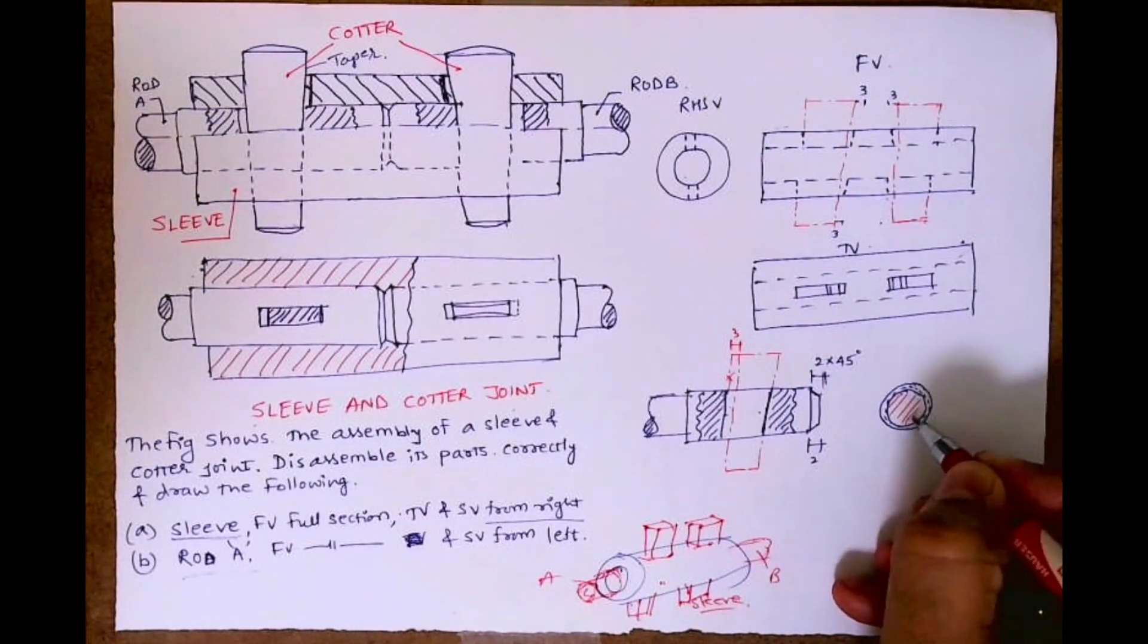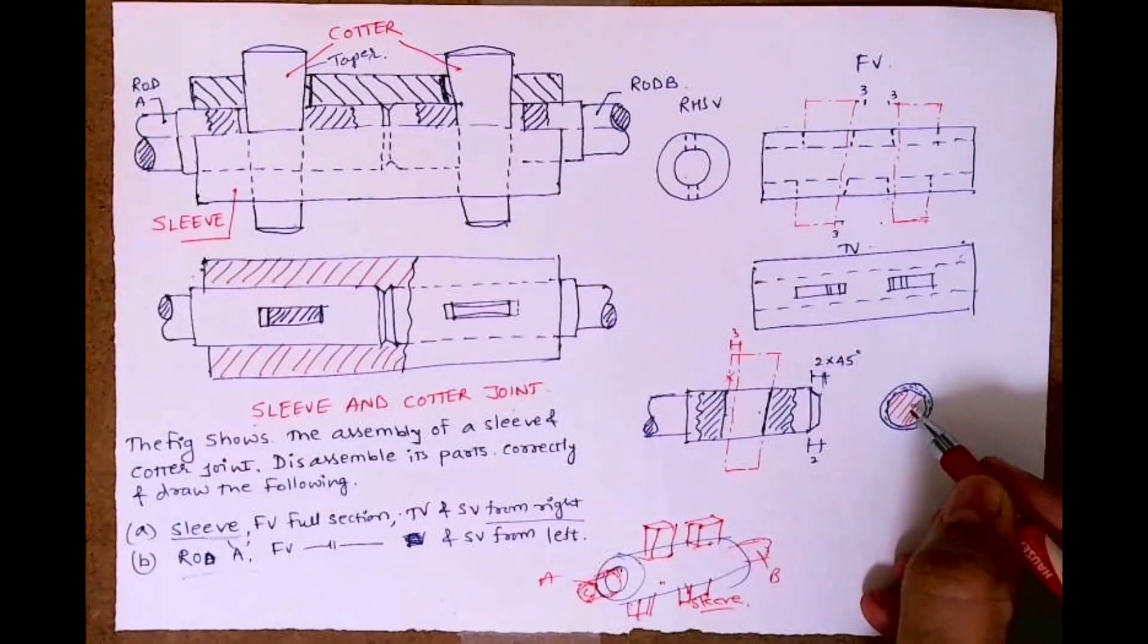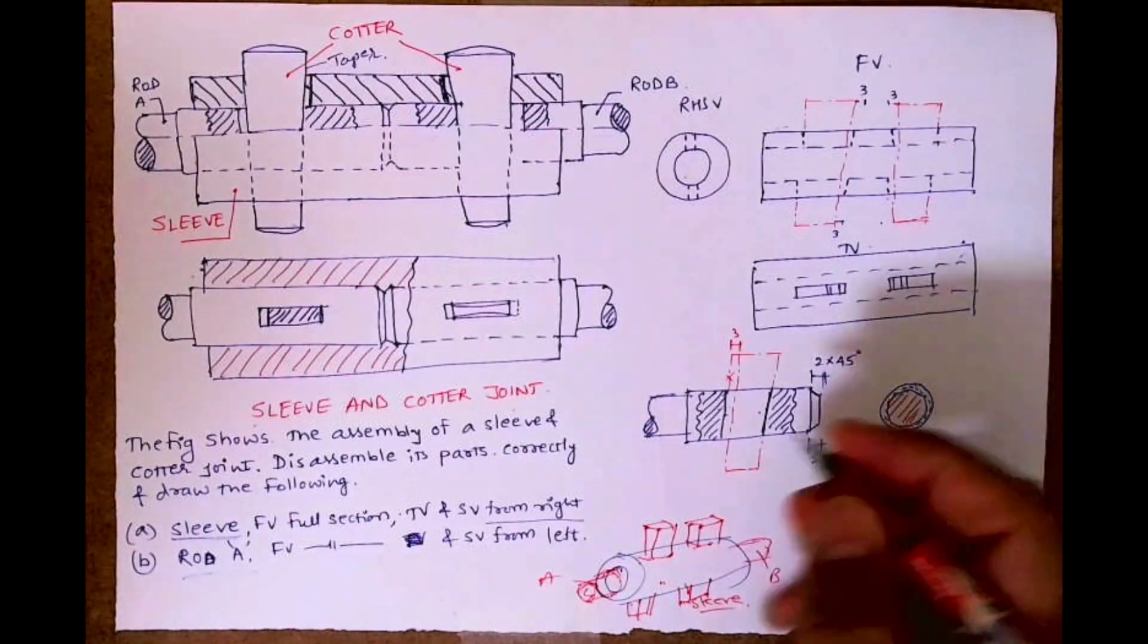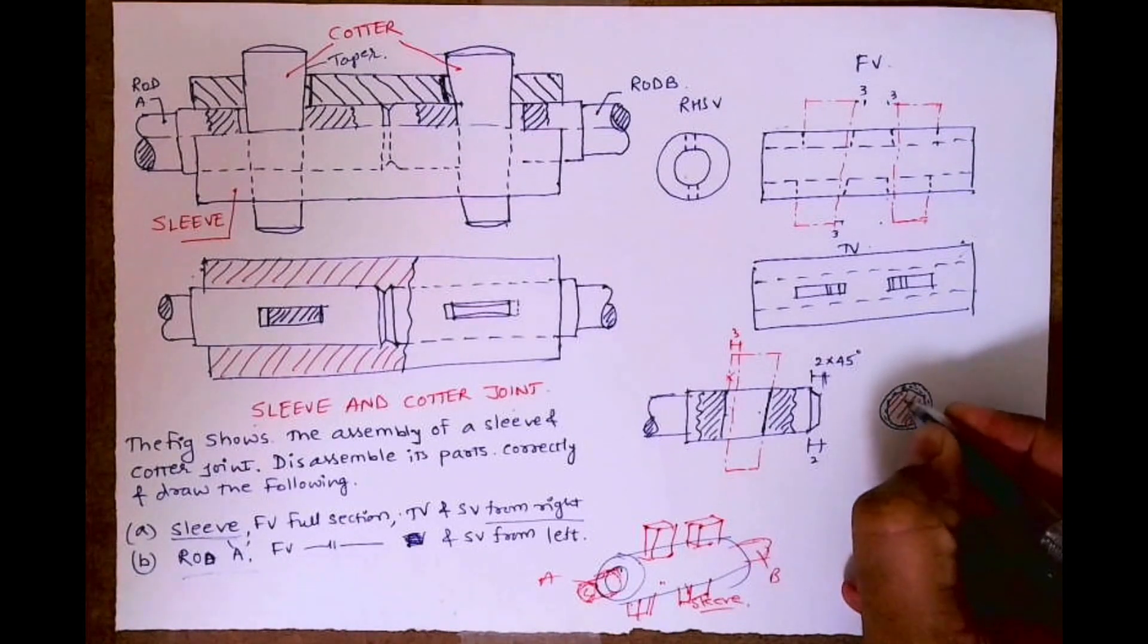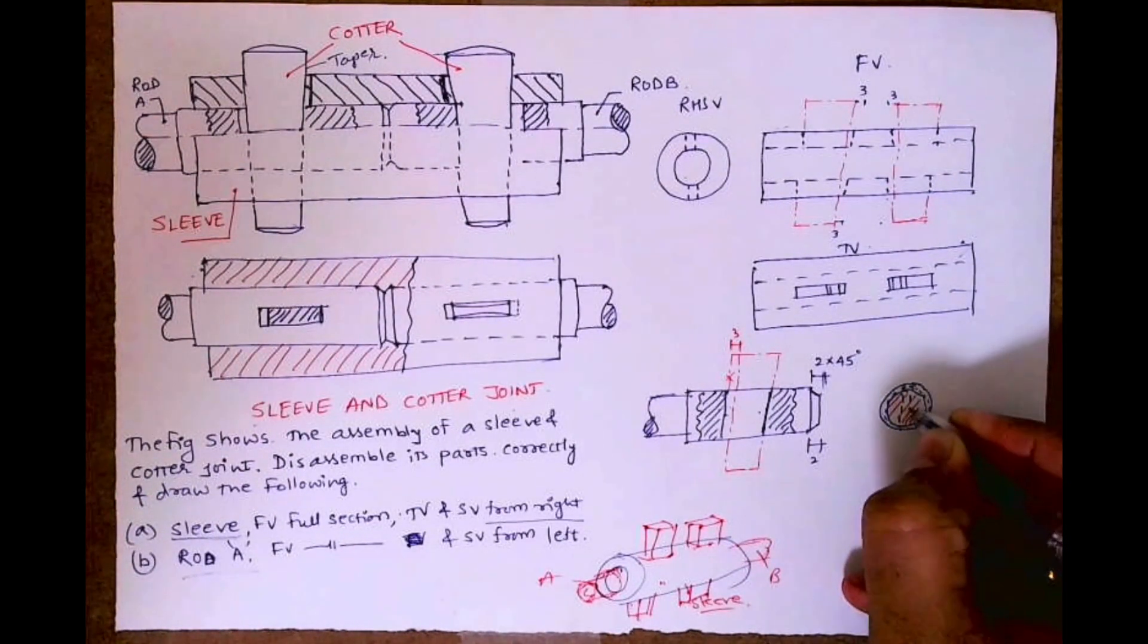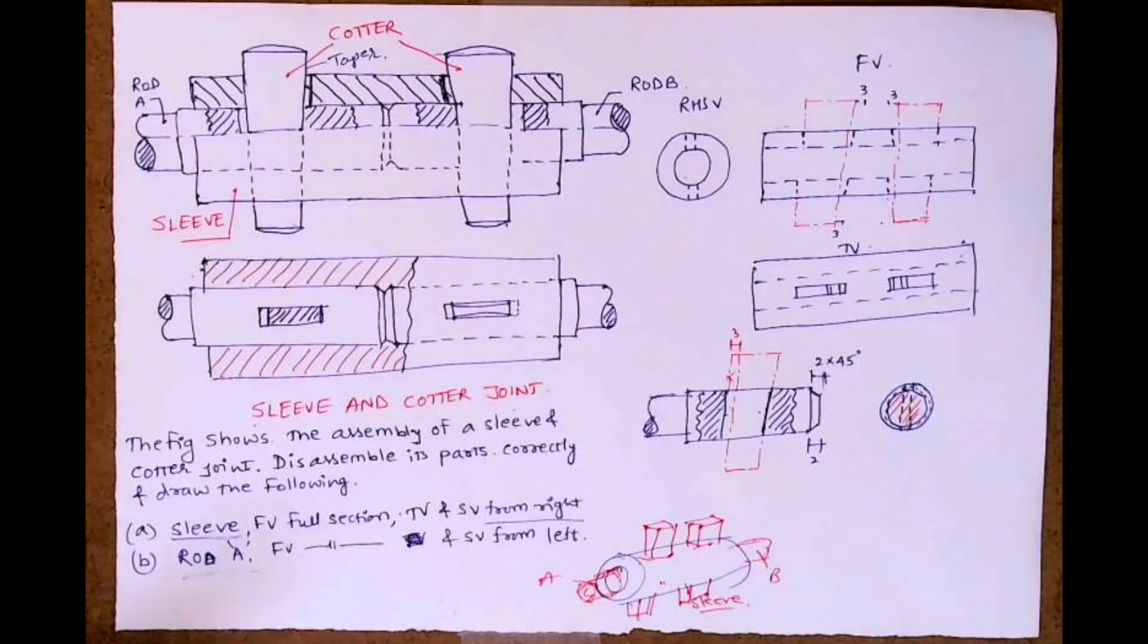And this part will be hatched because it's a shaft, and we'll have dotted line for cotter like this.